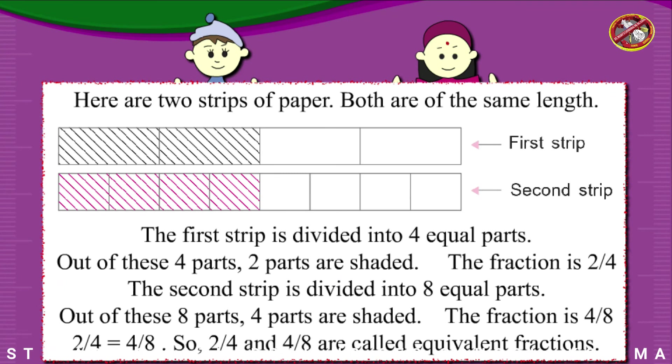Equivalent fractions. Here are two strips of paper. Both are of the same length. First strip. Second strip. The first strip is divided into four equal parts. Out of these four parts, two parts are shaded. The fraction is 2/4.